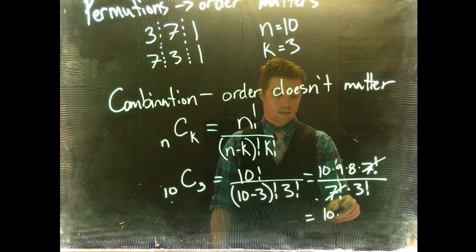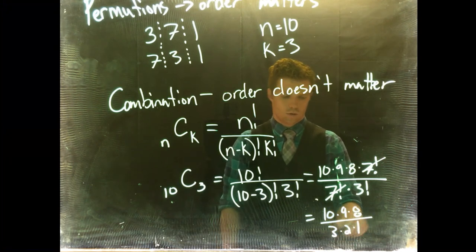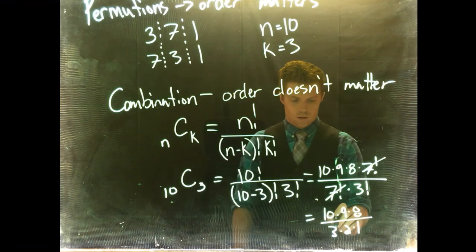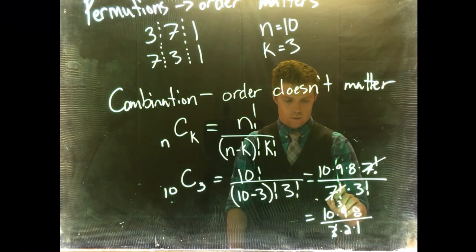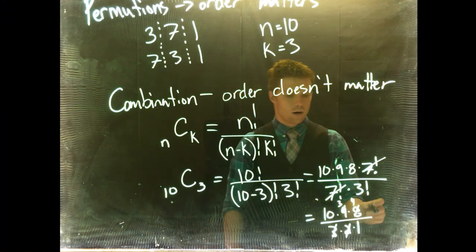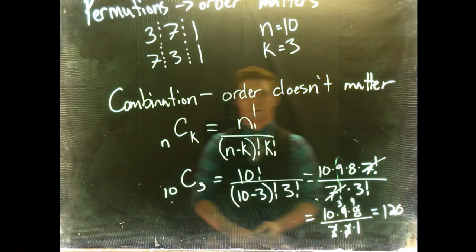Now we've got something a little bit simpler: 10 times 9 times 8 divided by 3 times 2 times 1. Let's go ahead and do it. That can go into that 3 times, that would be 4, and then 10 times 3 is 30 times 4 is going to be equal to 120.